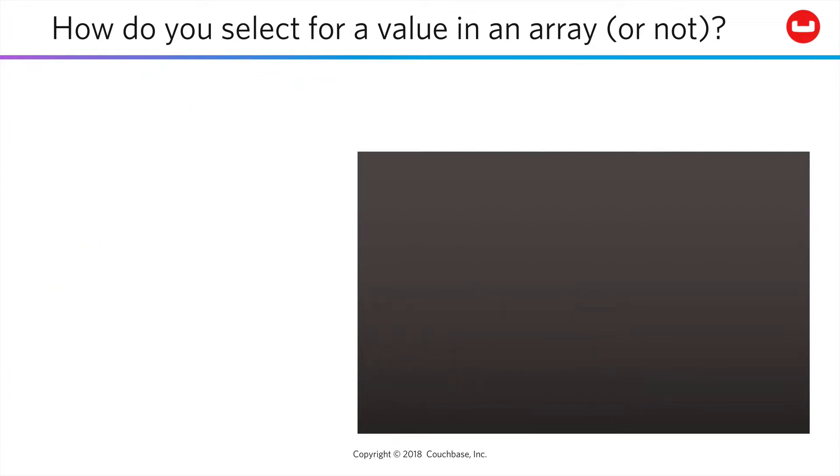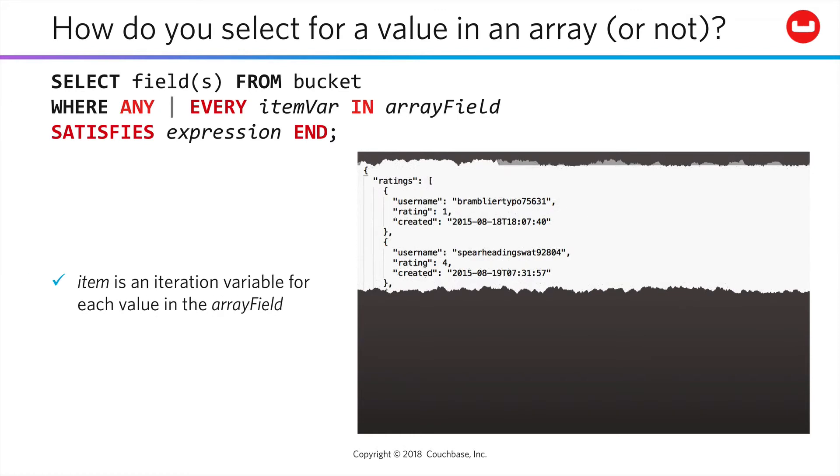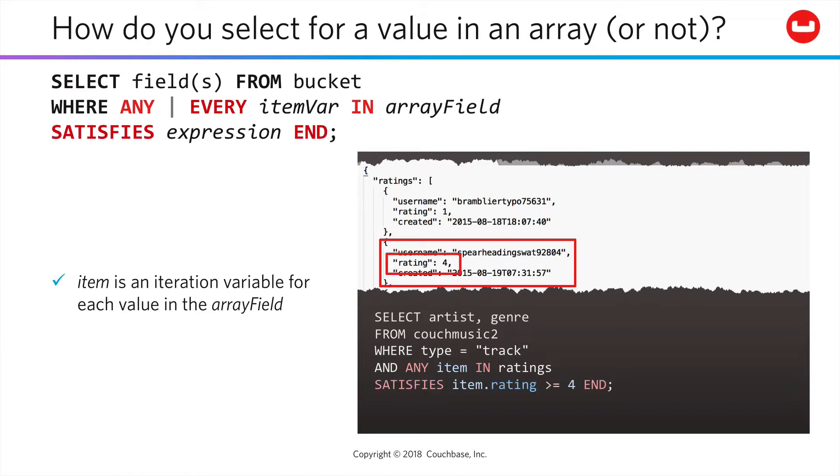Of course, whether the array value you are iterating is a scalar or complex value depends on what you need in your documents. If the array holds objects, then the iteration variable holds a reference to that object, and you test the values of that object as needed within your expression.